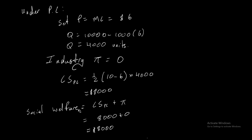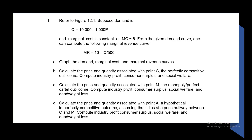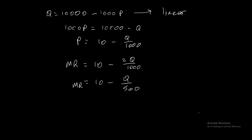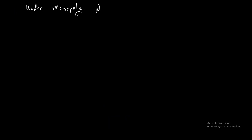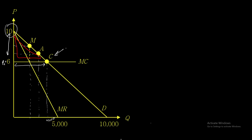Now we move on to Part C. Calculate the price and quantity associated with point M, the monopoly or perfect cartel outcome. Compute industry profit, consumer surplus, social welfare, and deadweight loss. Point C is your perfect competition, point M is your monopoly, and point A is your imperfect competition or oligopoly.